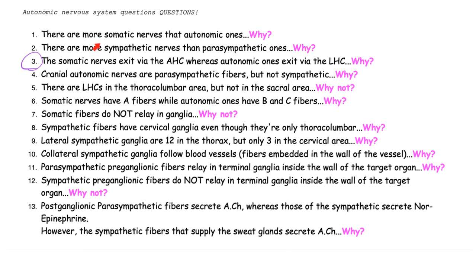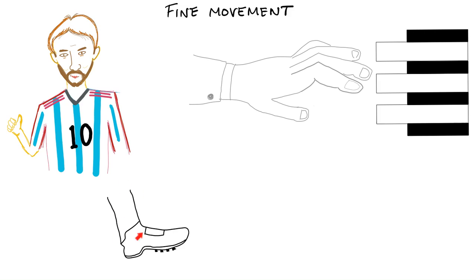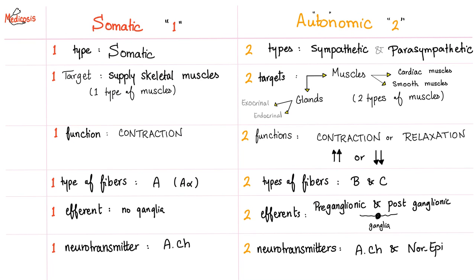Why do we have more somatic nerves than autonomic ones? Ask Lionel Messi whether he likes fine tuning in his feet. Now, let's compare somatic and autonomic. In somatic, everything is one; in autonomic, everything is two. Somatic is just one type; autonomic has sympathetic and parasympathetic. Somatic has one target: skeletal muscles. Autonomic has two targets: muscles and glands — cardiac and smooth muscles, exocrine and endocrine glands. Somatic has one function: to contract muscles. Autonomic has two: it can increase or decrease heart rate, contractility, gastric motility or secretion. Somatic fibers are A-alpha — the best, fastest, thick, and myelinated. Autonomic has B and C fibers, not as good as type A.